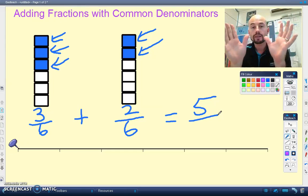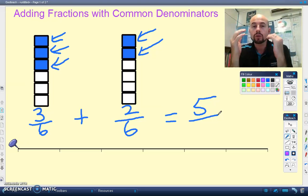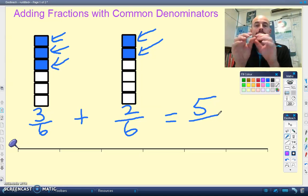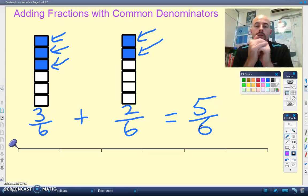We never add the denominators. They are just telling us what type of fraction they are. Each of those little pieces is a sixth. So how many sixths do we have? We have five of them. So five sixths. Three sixths plus two sixths equals five sixths.